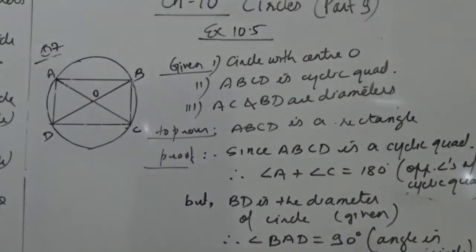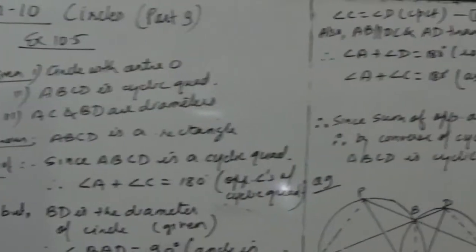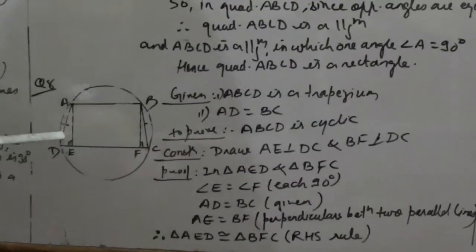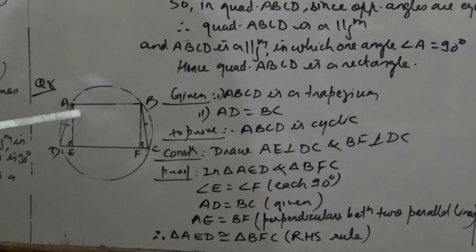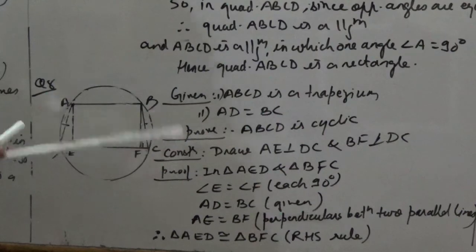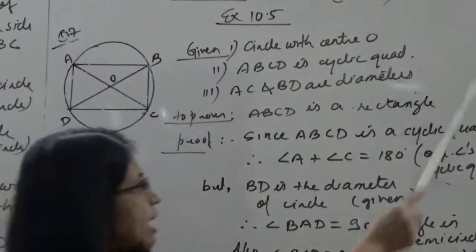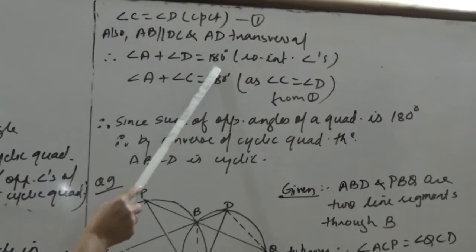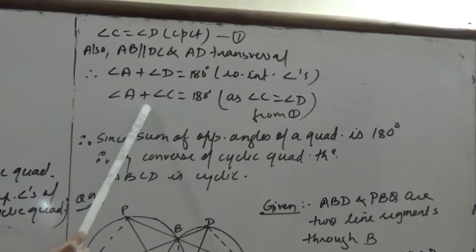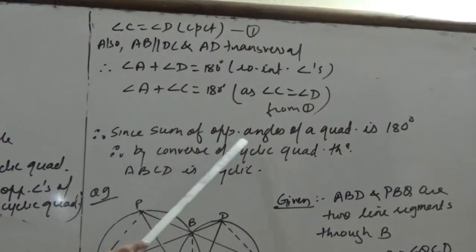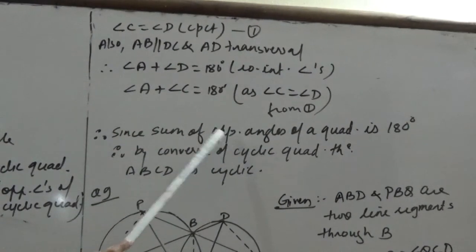By CPCT, angle C equals angle D. Now, AB is parallel to DC with AD as a transversal, so co-interior angles give angle A plus angle D equals 180 degrees. Since angle C equals angle D, we get angle A plus angle C equals 180 degrees. Therefore, since the sum of opposite angles is 180 degrees, by the converse of the cyclic quadrilateral theorem, ABCD is cyclic.